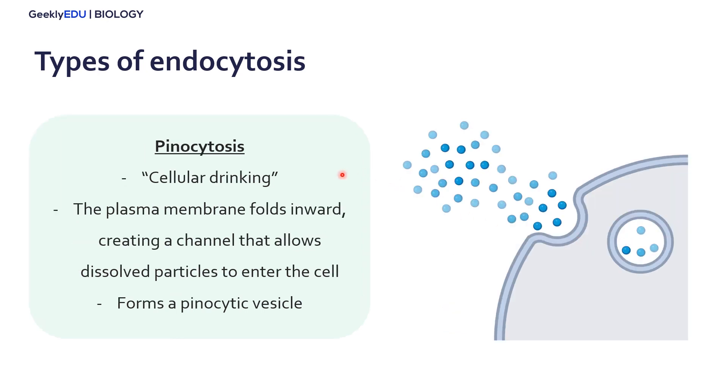The second is called pinocytosis, referred to as cellular drinking. Compared to phagocytosis, which is the cell eating a large molecule, pinocytosis is ingesting smaller molecules. The plasma membrane folds inward and creates a channel that allows dissolved smaller particles to enter the cell, forming a pinocytic vesicle.